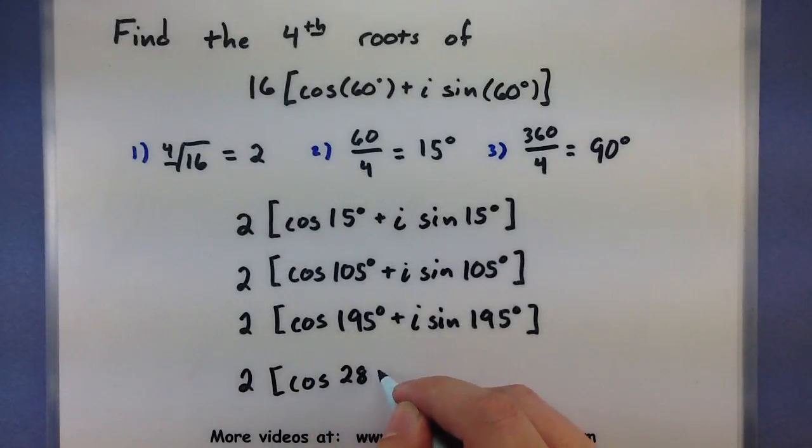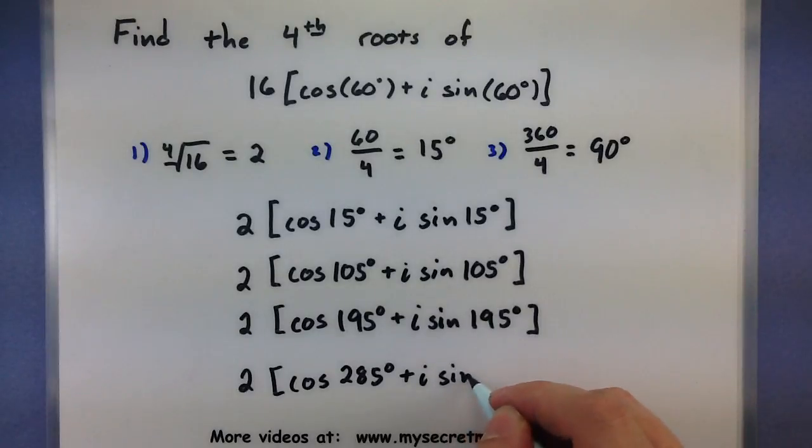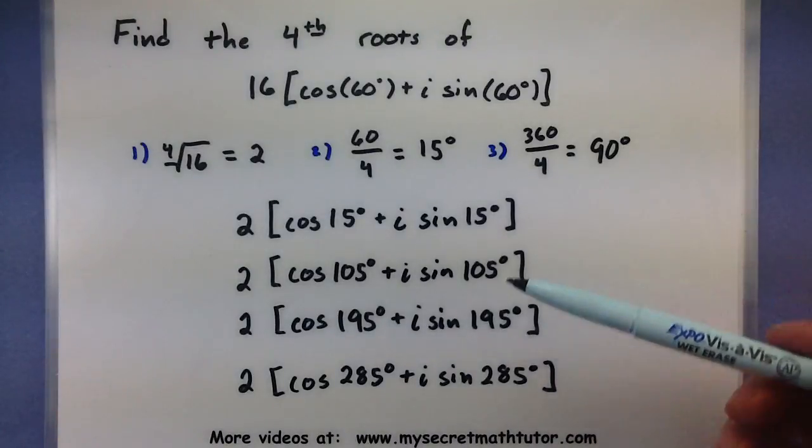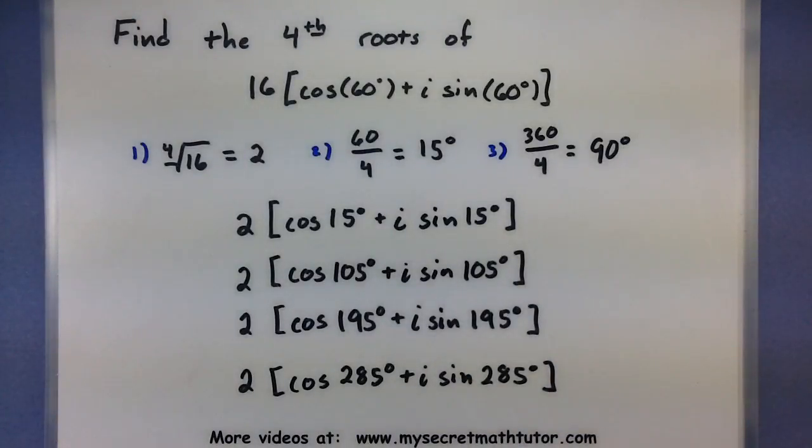So, we have 285 degrees. Now, if you accidentally forgot to stop even after you got 4, what you would end up doing is you'd get an angle that is coterminal with your 15. We'd essentially start repeating back over.